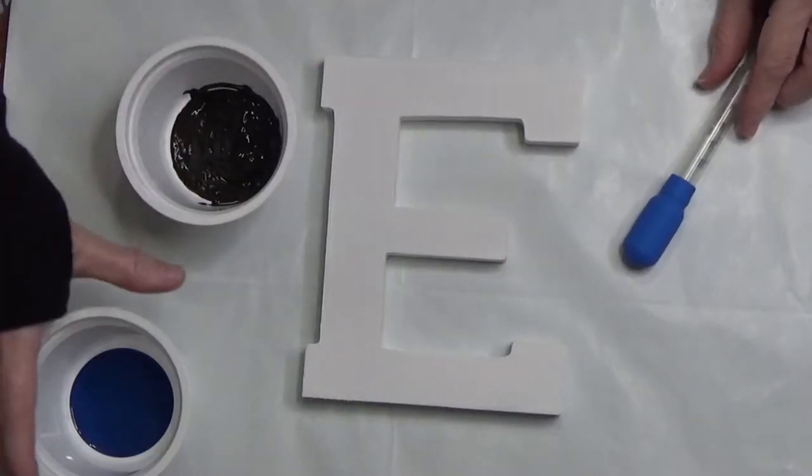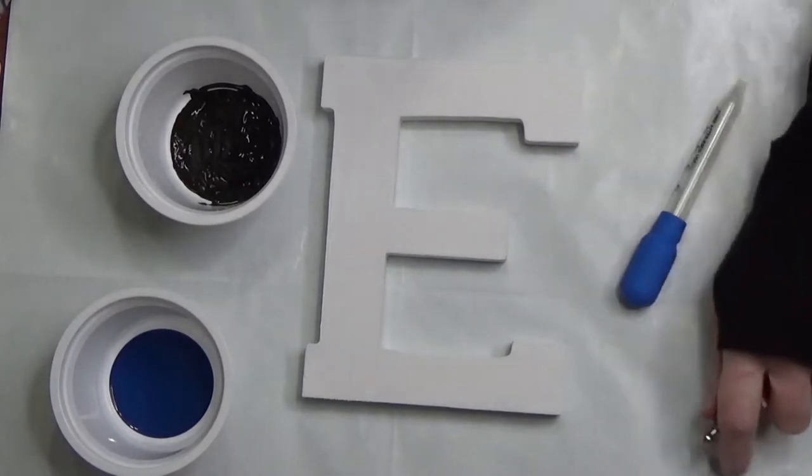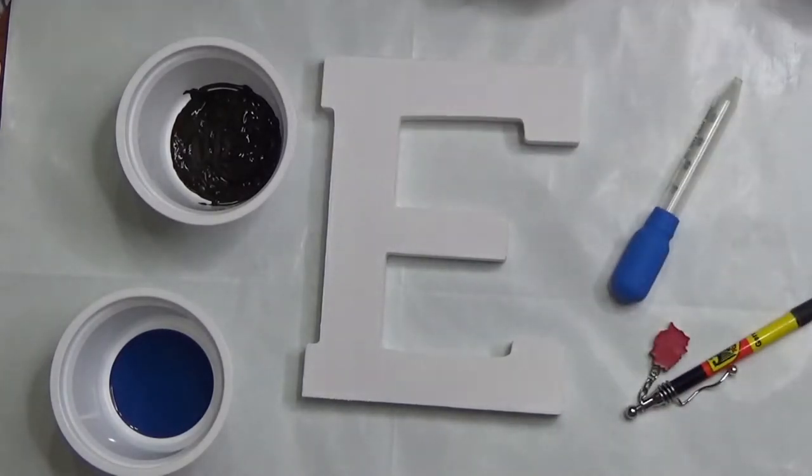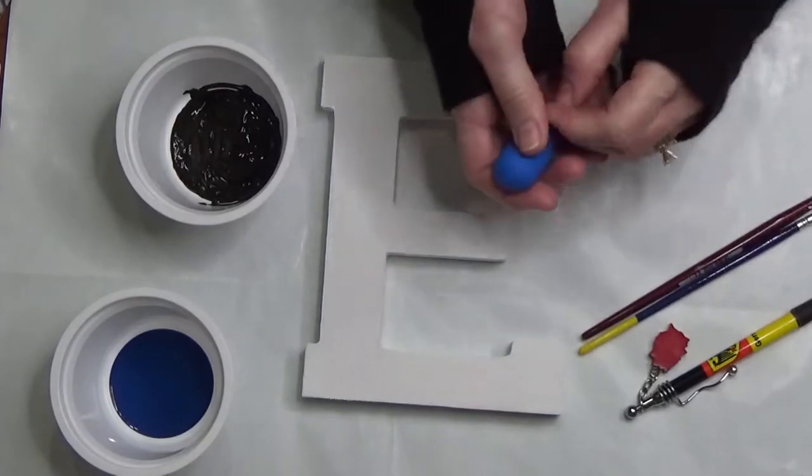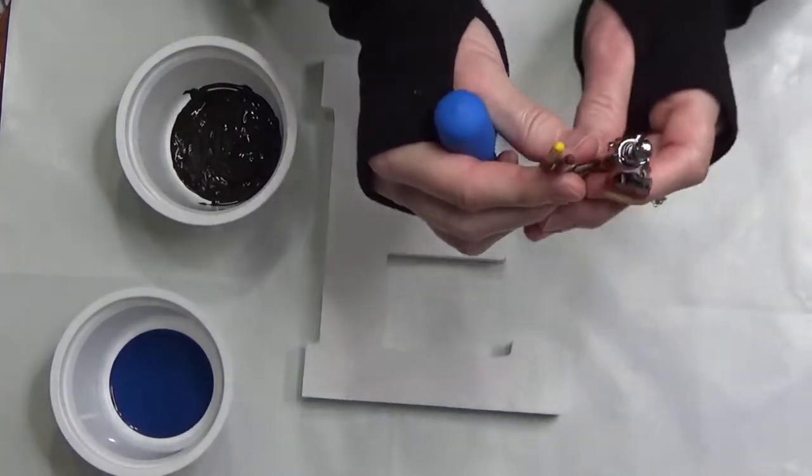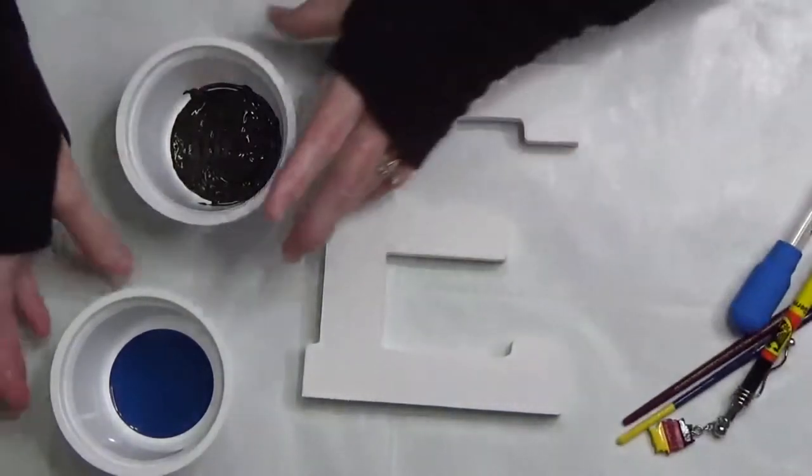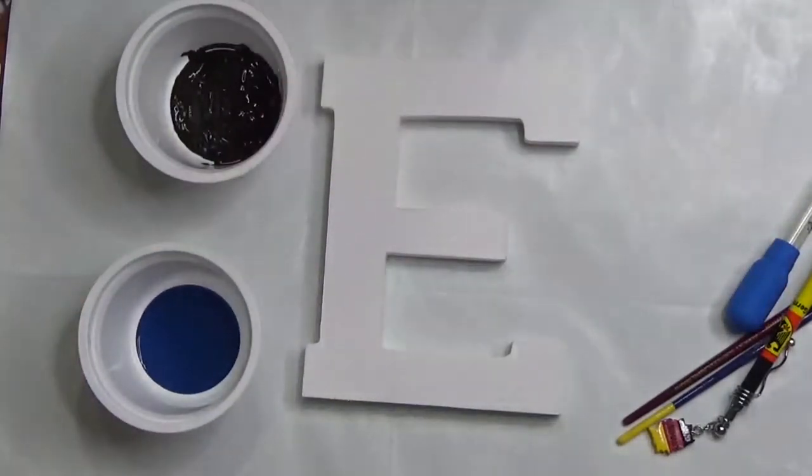I've gathered a couple of things that we're going to use to make polka dots. That's what we're gonna put on our letter E, just various things of different diameters that I can use to make little tiny polka dots on here. Blue and brown are the colors that we'll be using.